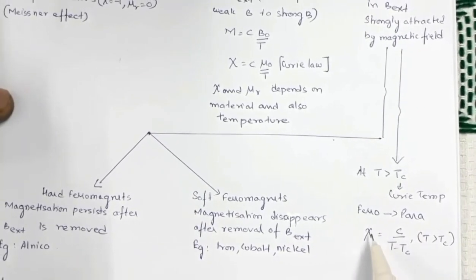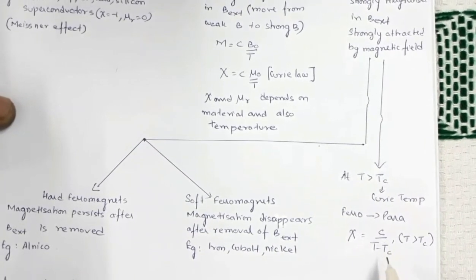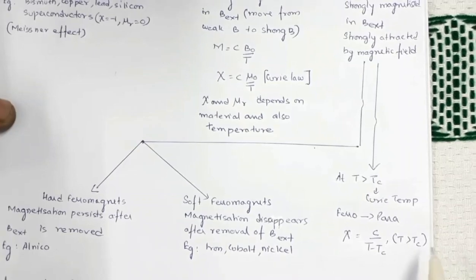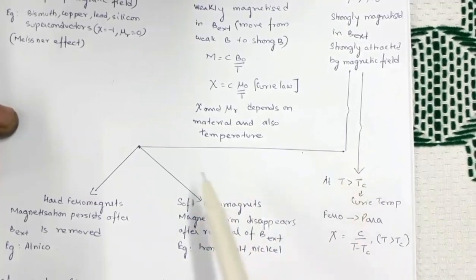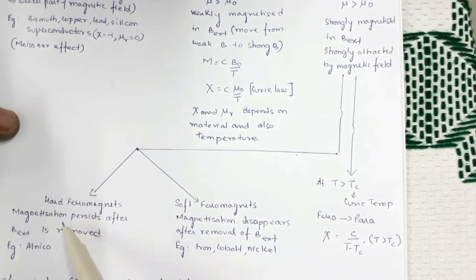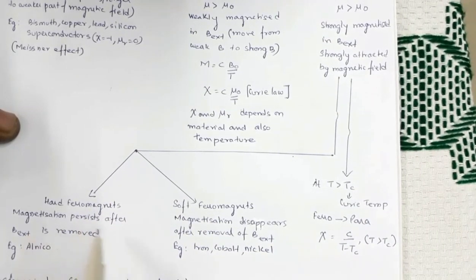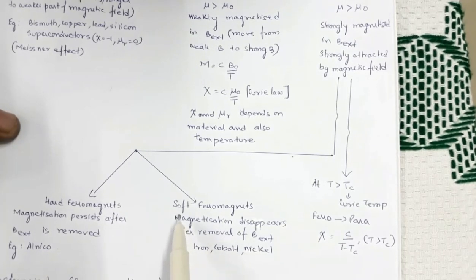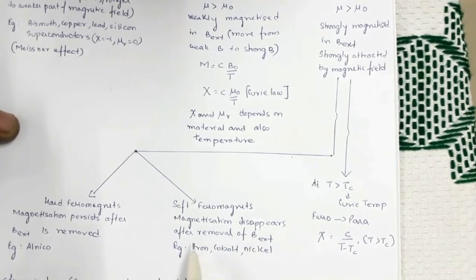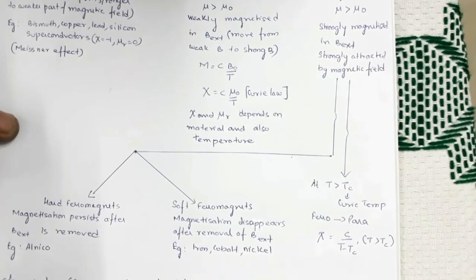The susceptibility for ferromagnetic materials above the Curie temperature is given by χ = C/(T − Tc), where C is the Curie constant and Tc is the Curie temperature. Ferromagnetic materials are further classified into hard ferromagnets and soft ferromagnets. For hard ferromagnets, magnetization persists even after the external magnetic field is removed — an example is Alnico, an alloy. For soft ferromagnets, magnetization disappears after removal of the external field — examples are iron, cobalt, and nickel.